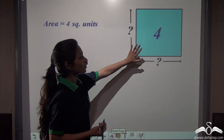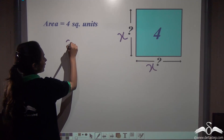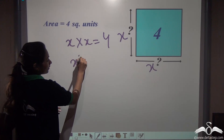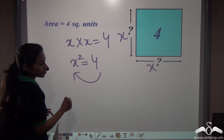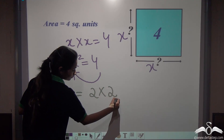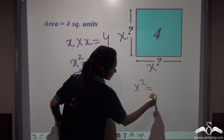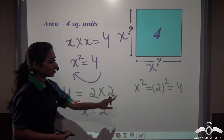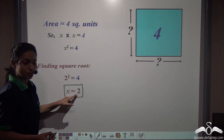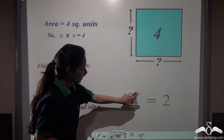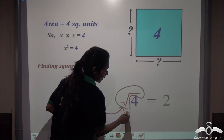Say we have been given the area of a square as 4 square units, with one side x. So x into x gives us 4, meaning x squared is 4. Since 4 equals 2 into 2, x equals 2. So the square root of 4 is 2. This symbol is called the square root sign or the radical sign.